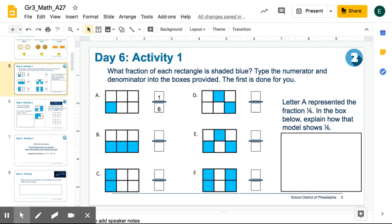Day six, activity one. What fraction of each rectangle is shaded blue? Type the numerator and denominator into the boxes provided. The first is done for you.